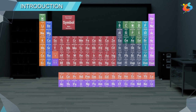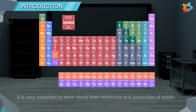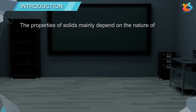In the periodic table, there are 11 gaseous elements, few are liquids, and the rest of the elements are solids. Hence, it is very important to learn about the structures and properties of solids.